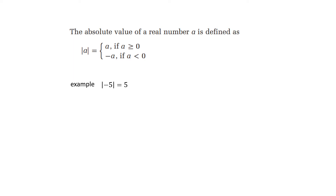We all know the meaning of absolute value of a real number. When a is greater than 0, the absolute value of a is a itself. If a is smaller than 0, the absolute value is going to be negative a. For example, the absolute value of negative 5 is going to be negative of this number, which is 5.